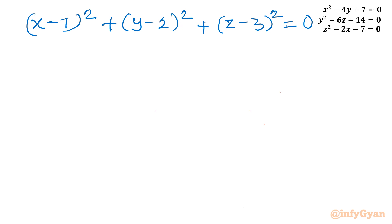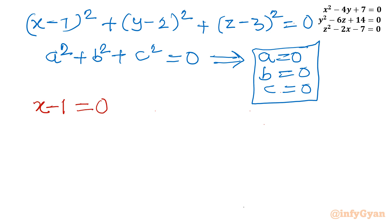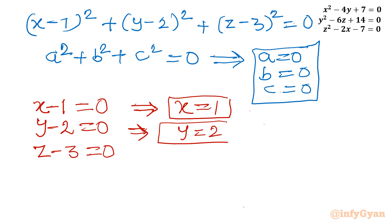Sum of squares equal to 0 for real solution if and only if each term will be 0. Let me write that identity: a² + b² + c² = 0, then we can conclude from here this is possible if and only if a = 0, b = 0, c = 0. Mandatory conditions. So as per our equation, I will write x - 1 = 0, y - 2 = 0, z - 3 = 0. Once this equation is true, then I can write x = 1, y = 2, and z = 3.